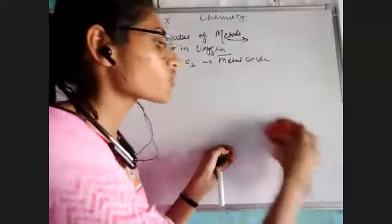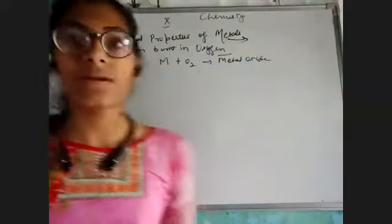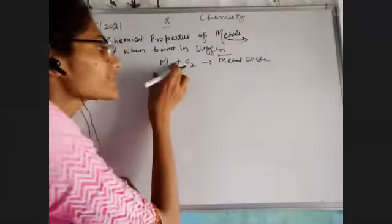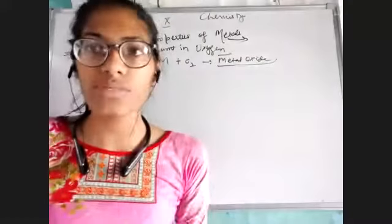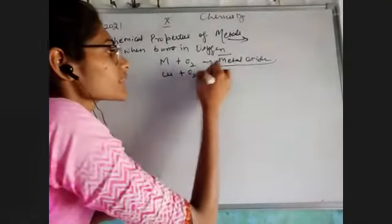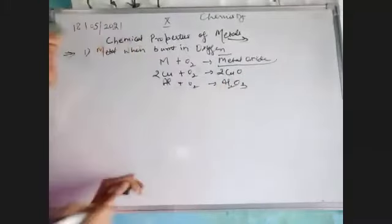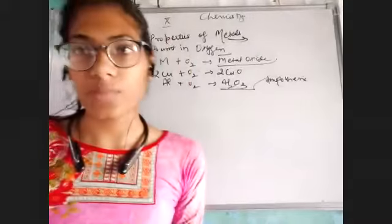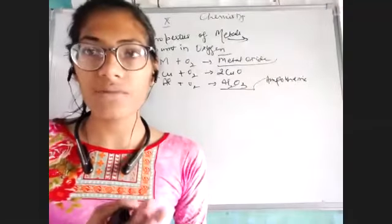In the chemical properties of metals, the first one was: what happens when the metal is burnt in oxygen or kept in air? Whenever a metal is put into oxygen, it forms a metal oxide — the metal is reacting with oxygen to form metal oxide. For example, copper reacts with oxygen to make copper oxide; aluminium with oxygen makes aluminium oxide, which is also known as amphoteric oxide — it can react with both acid and base.